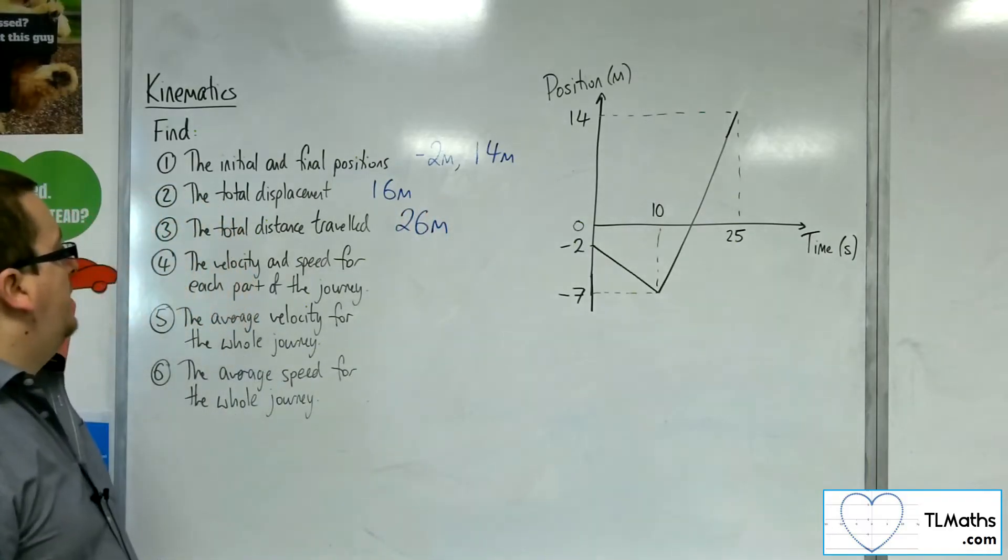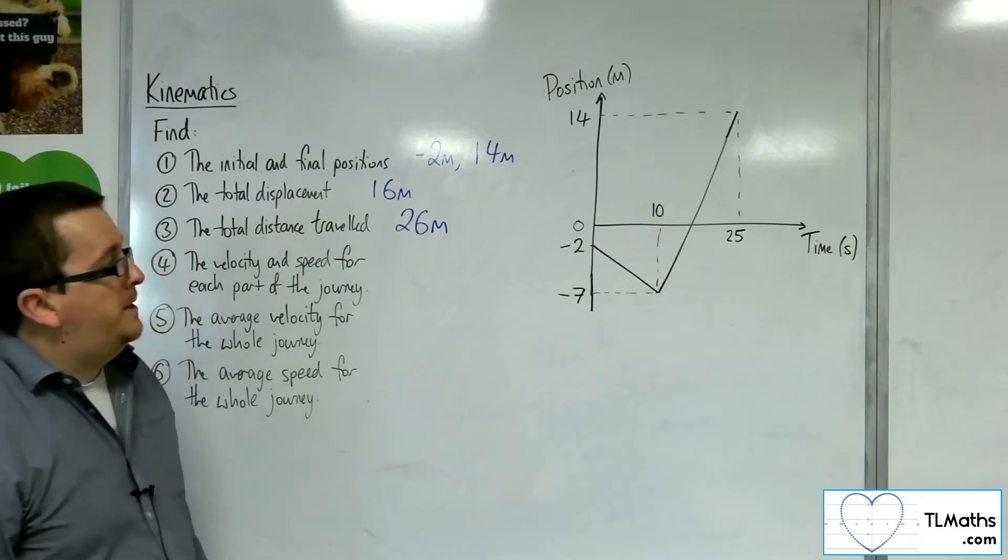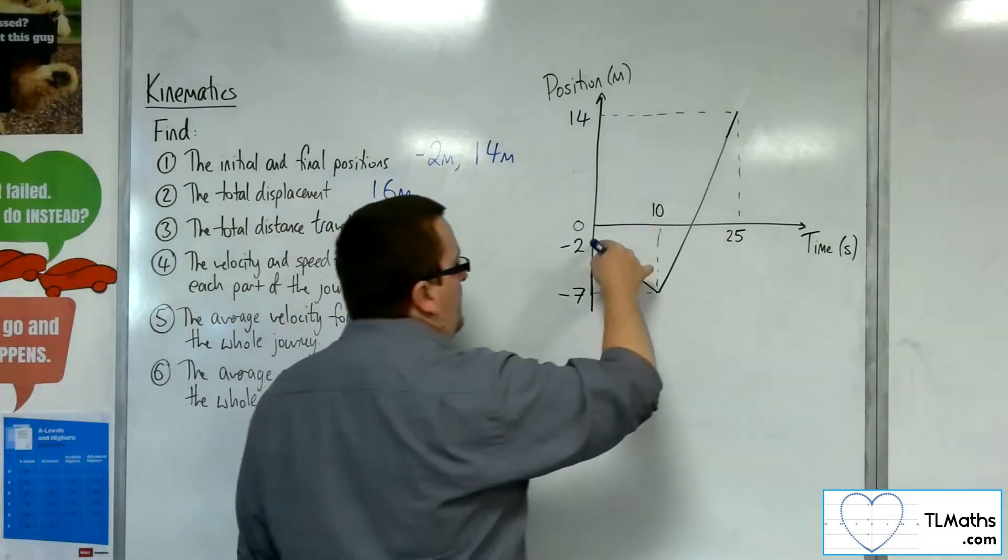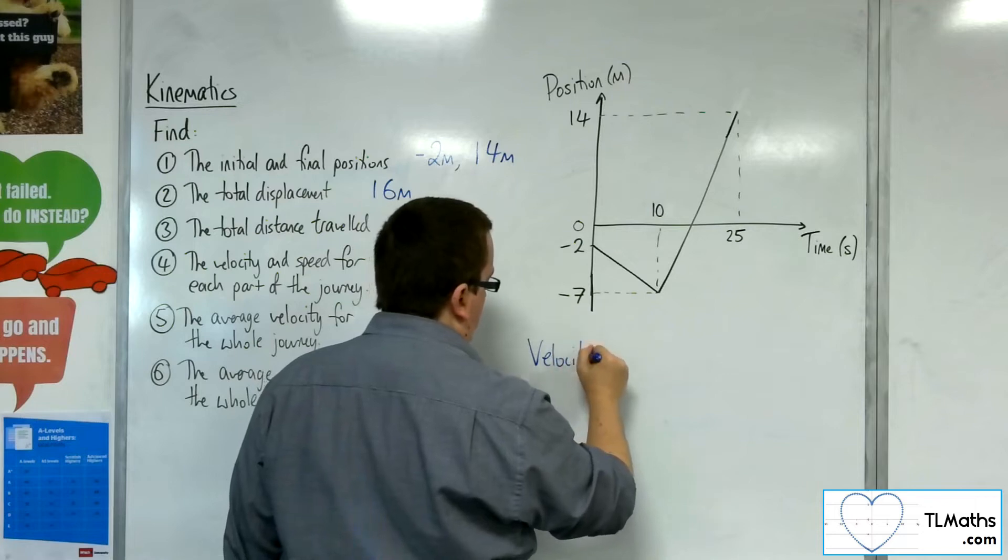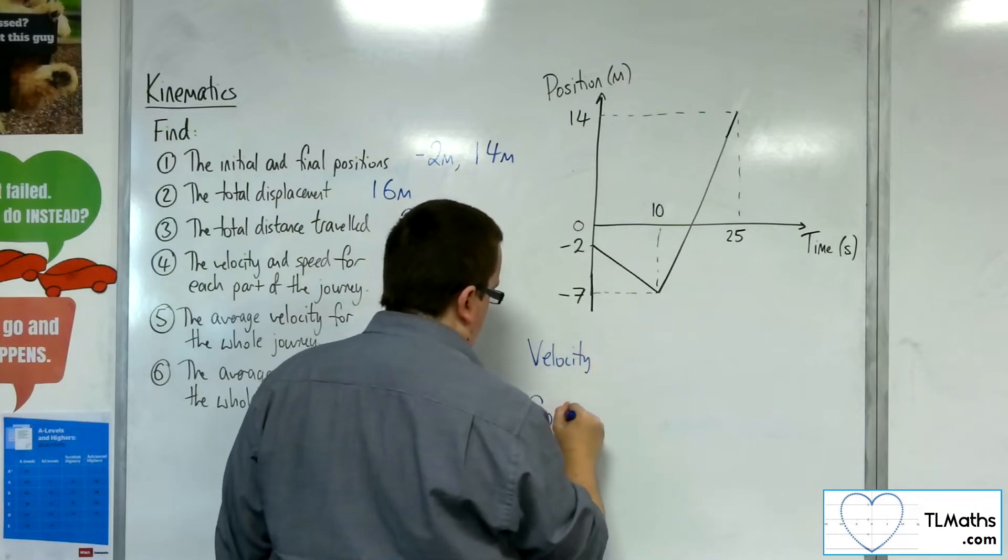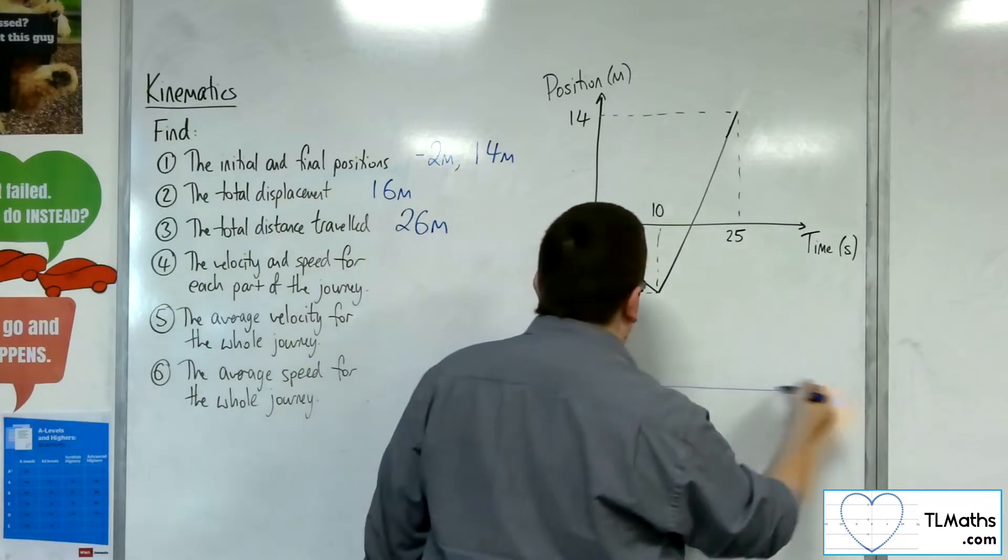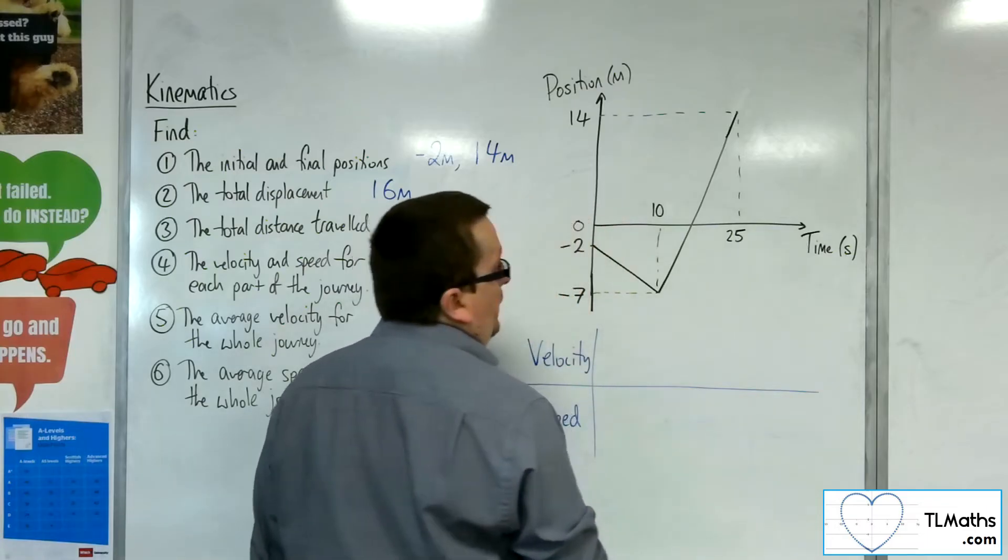The velocity and speed for each part of the journey. So for this section, we go with velocity and speed. For the first section,